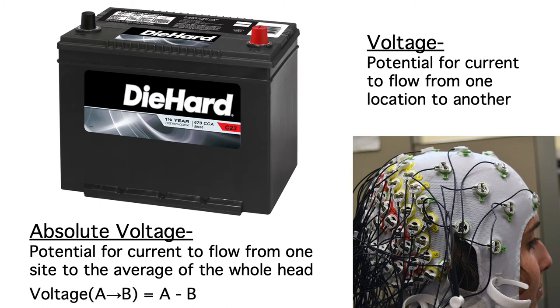For example, the voltage between electrode A and electrode B is just the absolute voltage at electrode A minus the absolute voltage at electrode B. So even though there really isn't a voltage at a single electrode site, and you can certainly never measure the voltage at a single site, the idea of an absolute voltage can be useful mathematically.